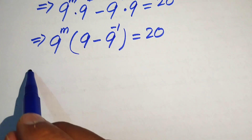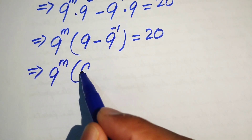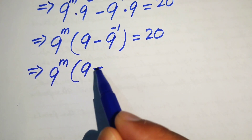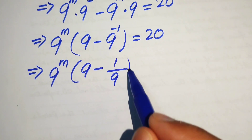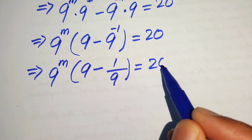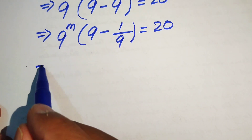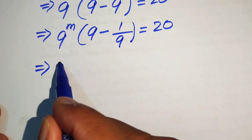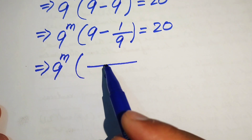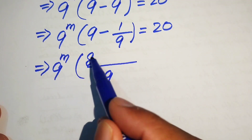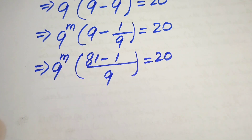In the next step we have 9 to the power of m into 9 minus 1 over 9, equals 20. We take the LCM of this term — the LCM is 9 — and we get 9 to the power of m into 81 minus 1 equals 20, giving 9 to the power of m into 80 over 9.